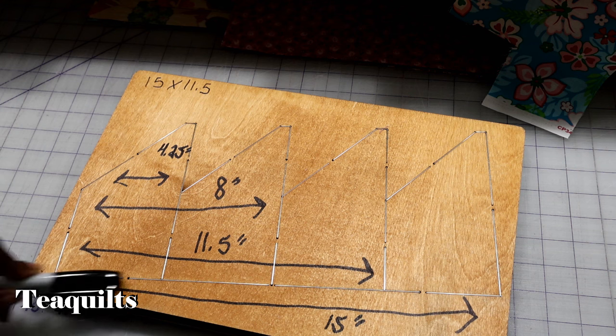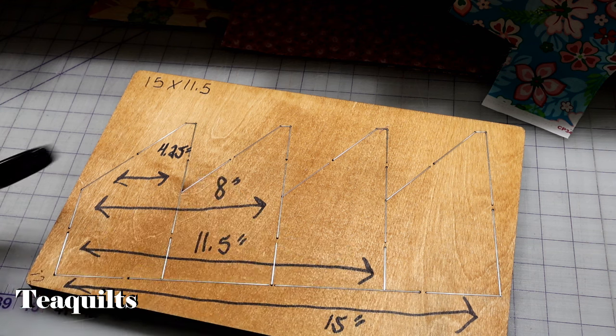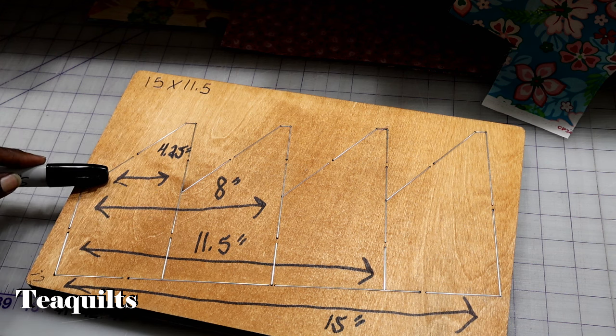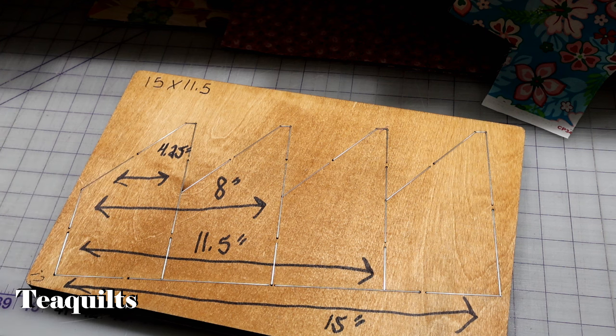So this piece here would be cut 15. This piece here, for three, would be 11.5. Two of them, I would cut a strip eight inches. And then for just this one, I would cut a strip four and a half. Okay.